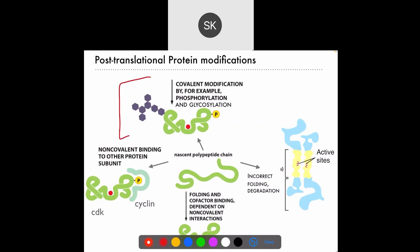At the top here we have something called covalent modification. The word covalent refers to a type of bond we've talked about since the beginning of the semester — covalent bonds are those where atoms share electrons, so they are strong bonds. When we talk about covalent modification, we are talking about the addition of some chemical group to a protein.